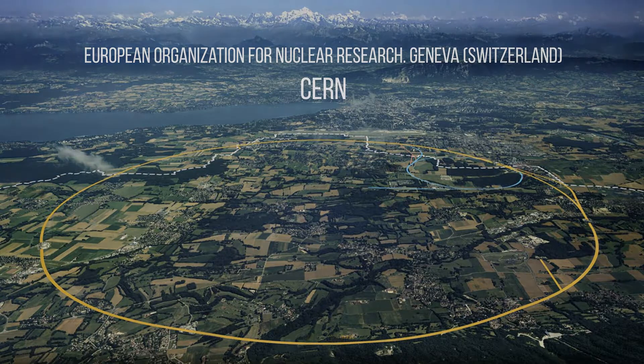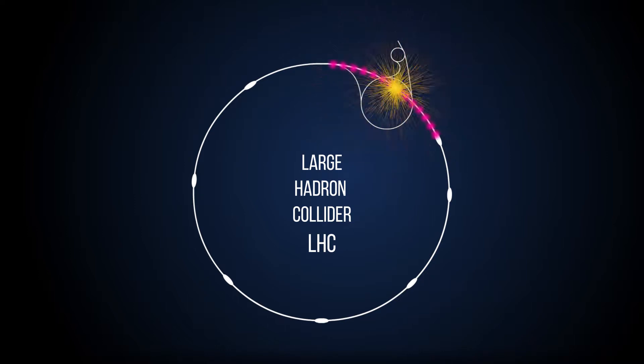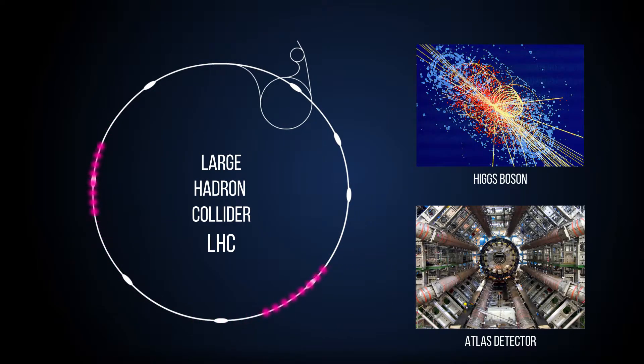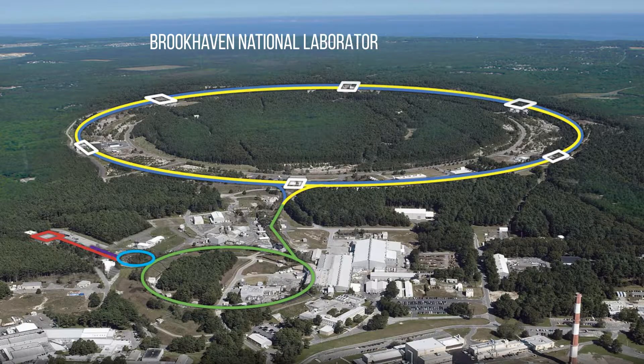This collider allows accelerating particles, such as protons or heavy nuclei, up to an energy of 14 trillion electron volts. Such colossal energies, together with high temperatures, let us study the processes that occurred at the earliest stages of our universe's formation. In the experiments at the Large Hadron Collider, the Higgs boson was discovered. It is a particle responsible for the mass in the elementary particles.